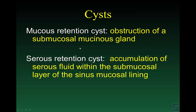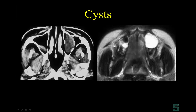The sinuses are lined by mucosa containing mucous retention cysts and serous retention cysts. The true definition of a cyst is obstruction of one of these glands — a mucous retention cyst or a serous retention cyst. On CT, a classic cyst appears as a smooth, low-attenuation lesion, and on T2-weighted MR it shows fluid signal.